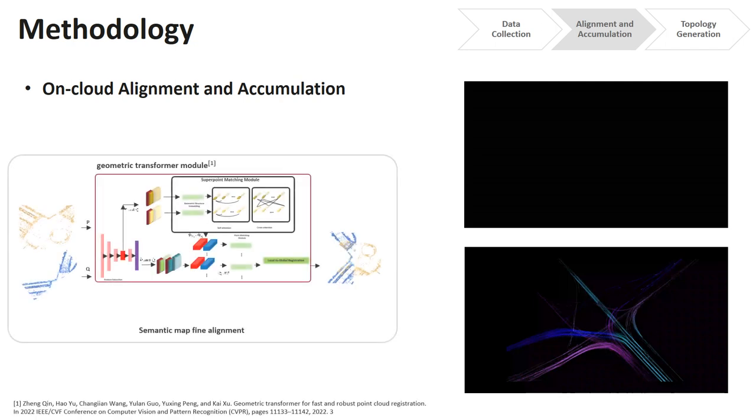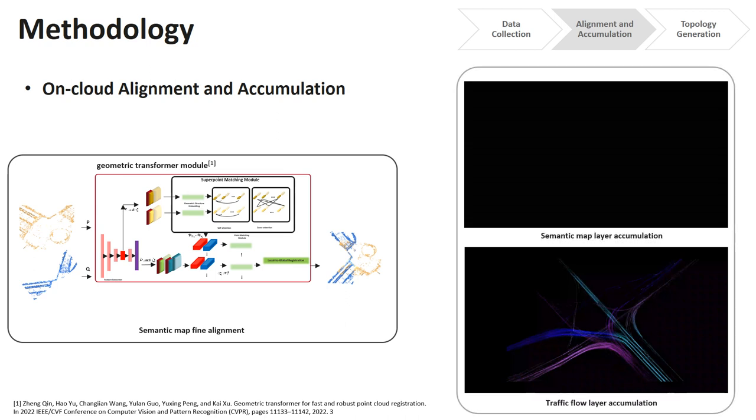With the continuous increase of the crowdsourcing data, we can see that the semantic map becomes more complete and the traffic flow becomes denser accordingly.